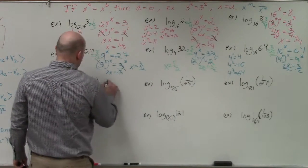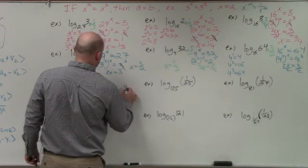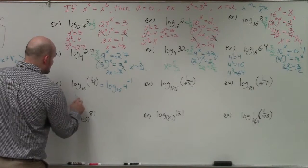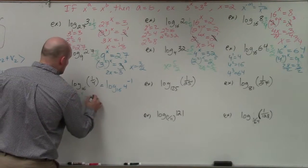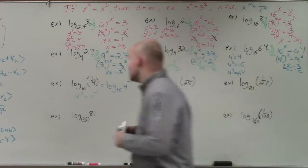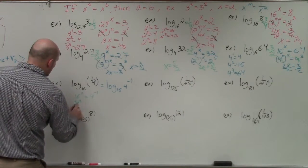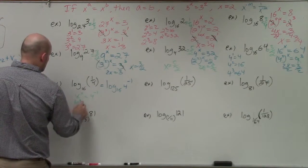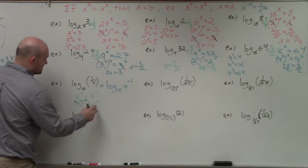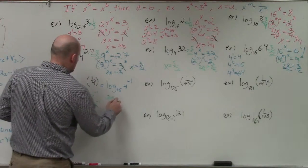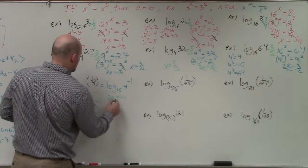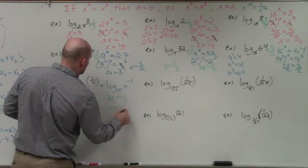So I rewrite this as log base 16 of 4 to the negative first power. In reality I'm asking: 16 raised to what number equals 4 to the negative first power? Since 16 is 4 squared, I write 4 squared raised to the x equals 4 to the negative first. The bases divide out, leaving 2x equals negative 1, so x equals negative one-half.